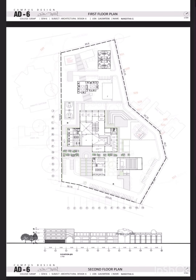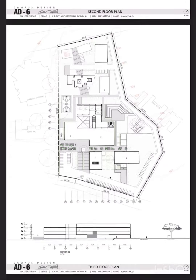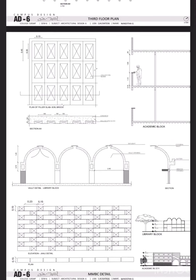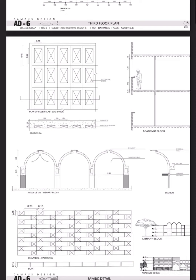The second floor consists of working labs with faculty rooms. The third floor consists of studios. This is the construction detail for the filler slab, wall detail, and the jaali work.